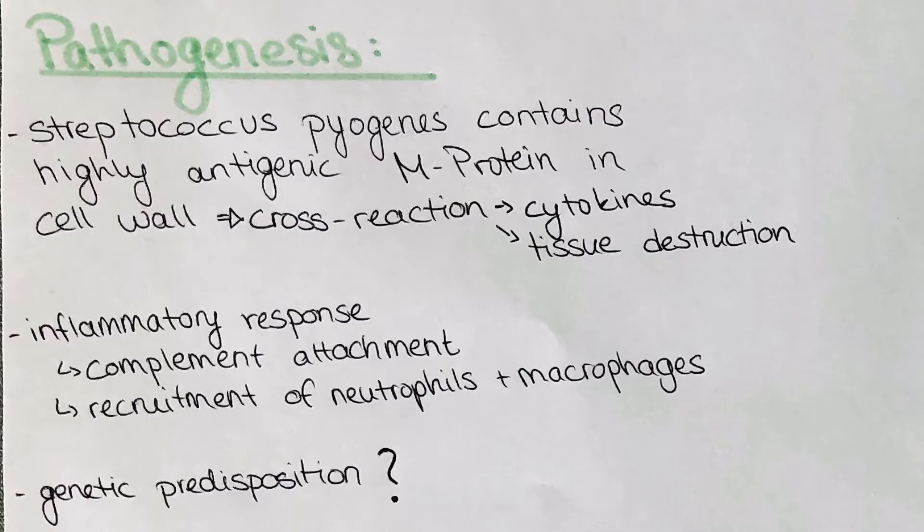Now I first want to talk about pathogenesis — what actually happens in the body after this infection. Streptococcus pyogenes, the most famous of this group of agents causing rheumatic fever, contains a highly antigenic protein, the M protein, in its cell wall.